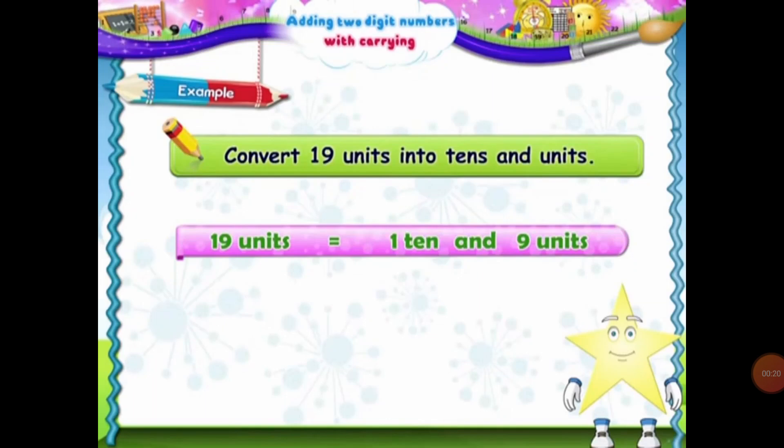First of all, we are going to recall the concept of place value. So have a look at this example: convert 19 units into 10s and units. Students, as you all know that 19 is a two-digit number. That means it will be placed under the units place and 10s.